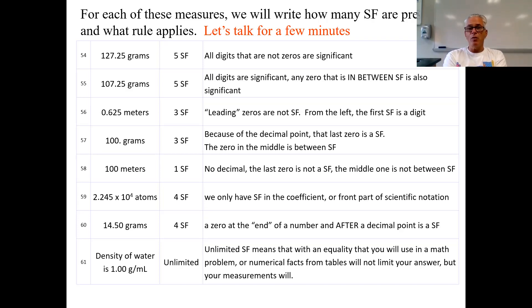Number 56 is different. This is what I call the leading zero: 0.00625. That zero in the front actually is a placeholder — you're not counting it. The first significant digit is the six-tenths place. Six hundredths and five thousandths — we disregard that leading zero. It's not significant, so that number only has three significant figures.